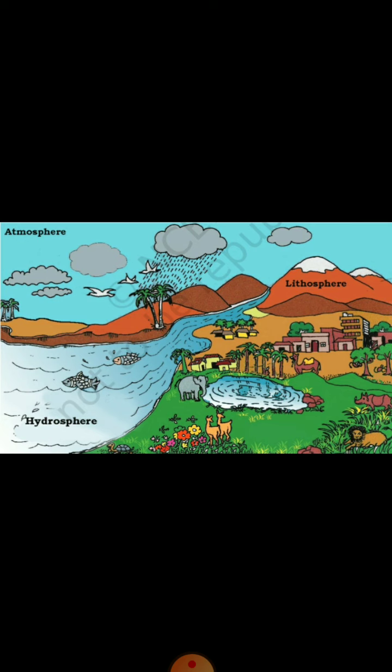Water covers three-fourths of the earth's surface in the form of oceans, rivers, lakes, ponds, groundwater and even in the form of glaciers.